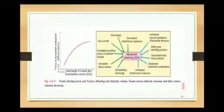Frank-Starling curve and the factors affecting end-diastolic volume. The normal curve - myocardial stretching shown in green is increasing your end-diastolic volume. In blue, factors like decreased vascular resistance, increased pumping action of skeletal muscles, and increased blood volumes are all affecting the end-diastolic volume, which we will discuss in factors affecting venous return.